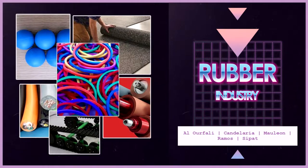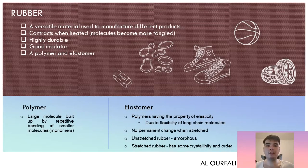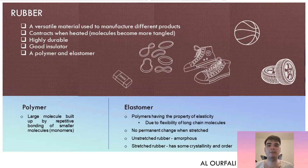Hello everyone, this is Group 2. We will be discussing rubber. Rubber is a versatile material used to manufacture different products. When contracted, its molecules become more intact. It is highly durable, a good insulator, a polymer, and an elastomer.